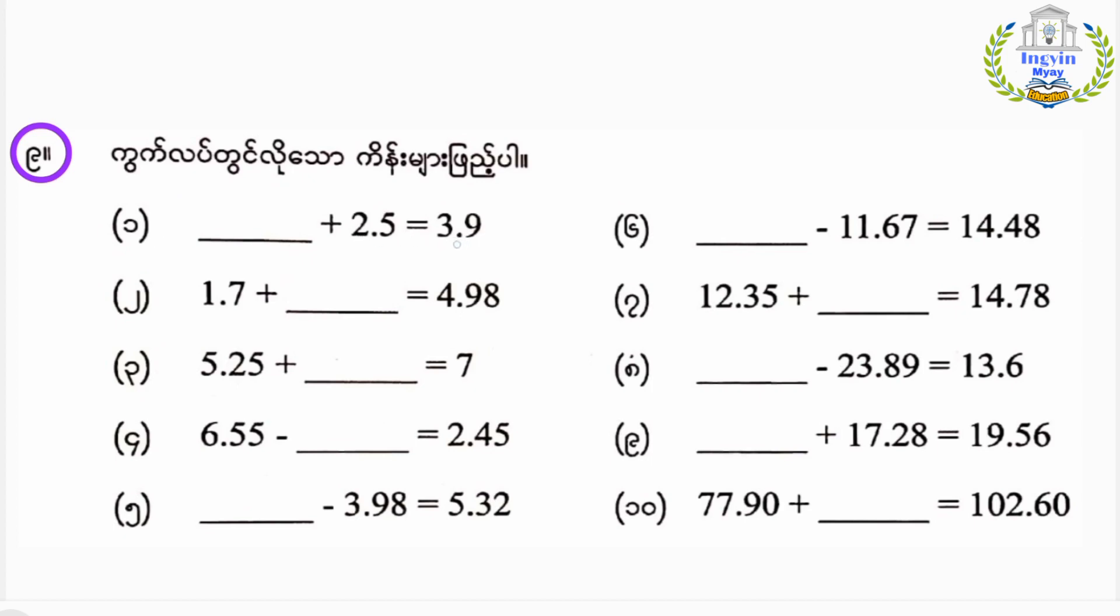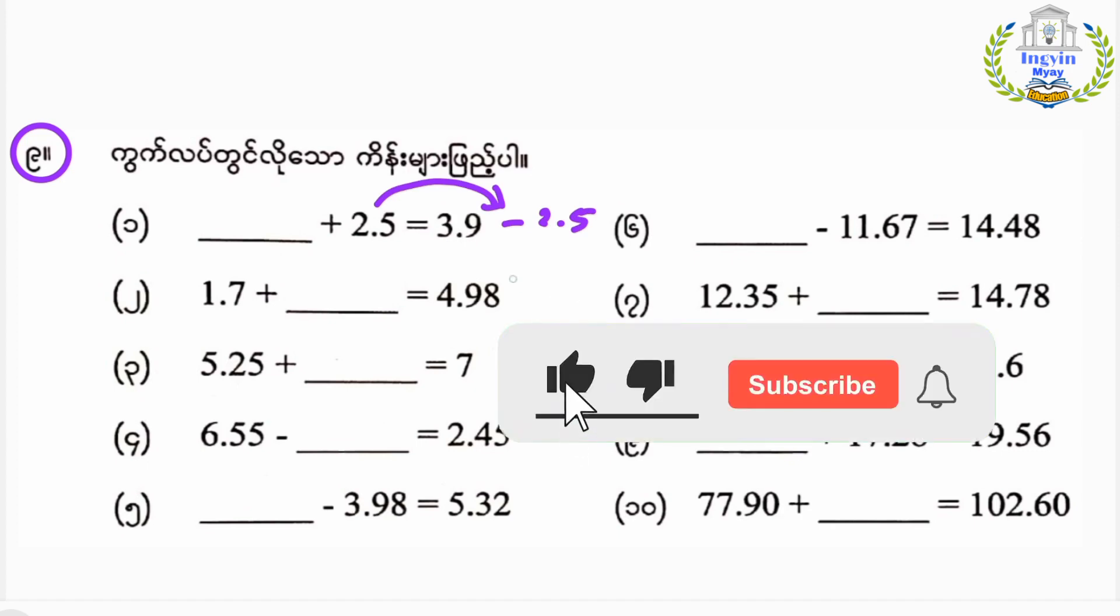One way: one point four plus two point five equals three point nine. Well, two point five, almost two point five minus two point five is one point four.